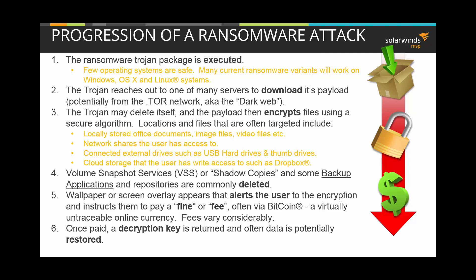If not blocked, the payload will encrypt files using a secure algorithm, looking at various locations and file types. Common targets include locally stored office documents, image files, and video files. It may look at network shares and connected external drives such as USB hard drives and thumb drives. It may also look at cloud storage — users who synchronize data with third-party solutions like Dropbox or Google Drive. Be on the lookout for unexpected bandwidth usage or higher than normal CPU and RAM utilization as a potential sign that the system is encrypting data in the background.